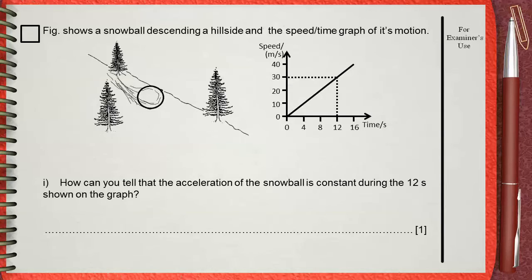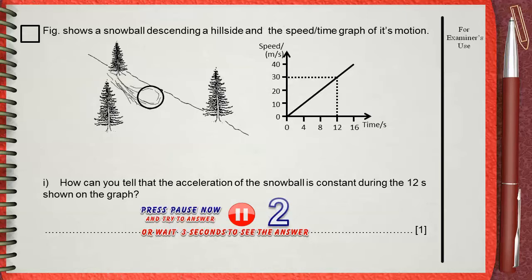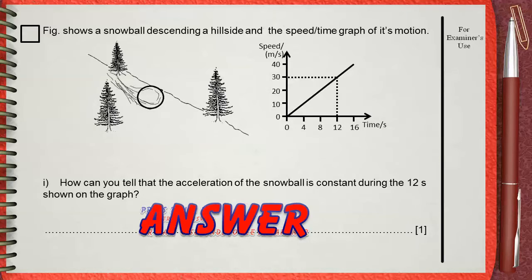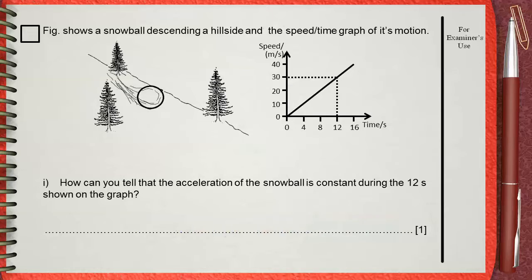Wait 3 seconds for the answer or press pause if you want to answer yourself. It's clear that the graph is a straight line passing through the origin. This constant gradient line means that speed changes constantly in equal time intervals.